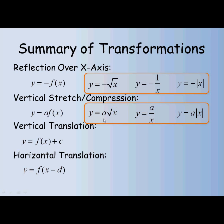For the other parent functions, we've got a multiplied by the square root of x, and that's going to affect the square root function the same way it would affect the quadratic — you multiply your y values from your parent function by your a value to get your new function. For the reciprocal function, we have a times 1 over x, which is the same as a over x. For the absolute value function, the a is multiplied in front of the absolute value sign, so it's a times the absolute value of x.